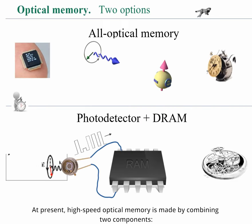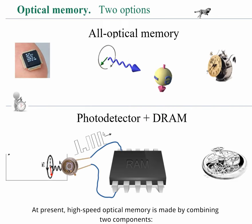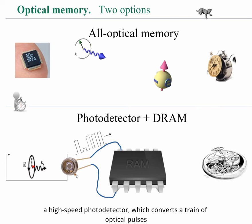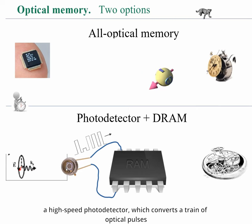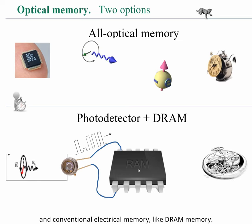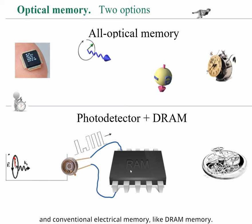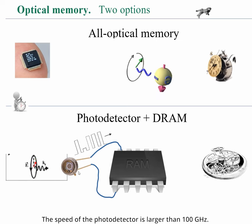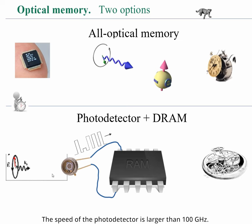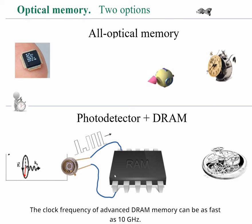At present, high-speed optical memory is made by combining two components: a high-speed photodetector, which converts a train of optical pulses into a train of electrical pulses, and conventional electrical memory like DRAM memory. The speed of the photodetector is larger than 100 GHz. The clock frequency of advanced DRAM memory can be as fast as 10 GHz.